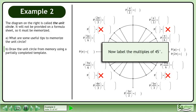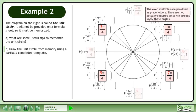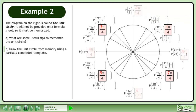Now label the multiples of 45 degrees. Count out multiples of π/4 around the unit circle. The even multiples are provided as placeholders. They are not actually required since we already know these angles. Reduce each fraction.